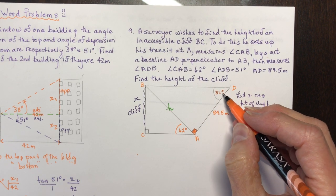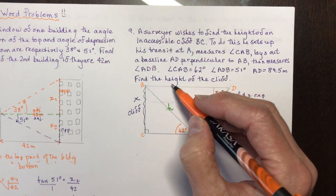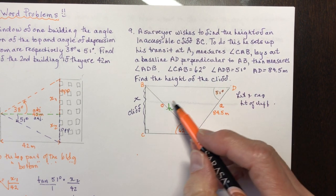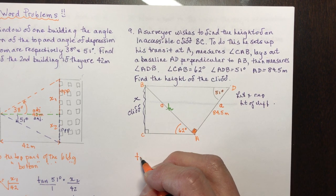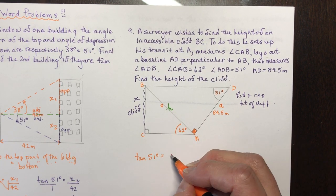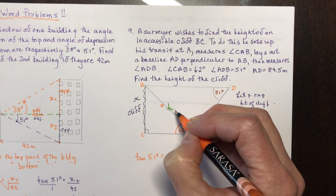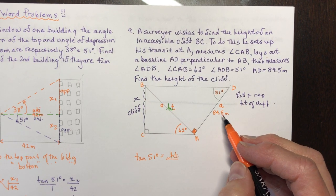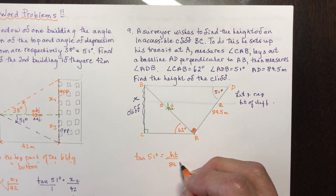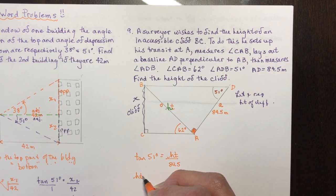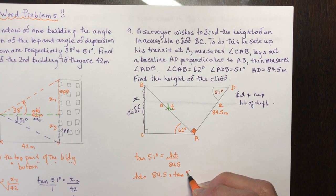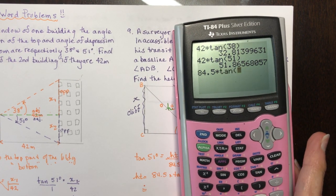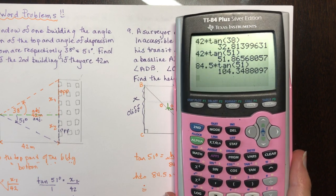In the right triangle with the 51-degree angle, ht is the opposite side and 84.5 is the adjacent, so this is opposite over adjacent — we use tan. Tan of 51 degrees equals ht over 84.5, so ht equals 84.5 times tan of 51 degrees. Using the calculator: 84.5 times tan 51 gives approximately 104.3.